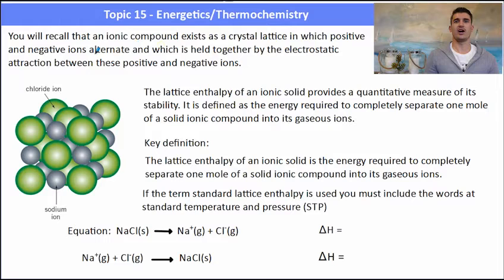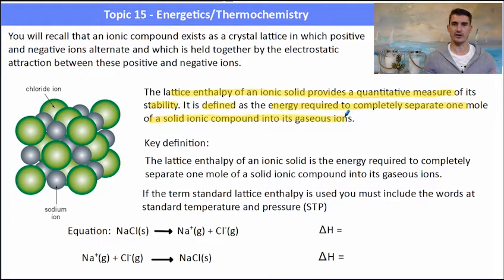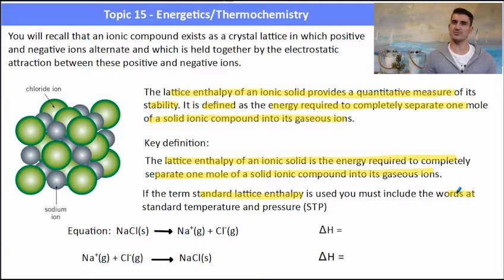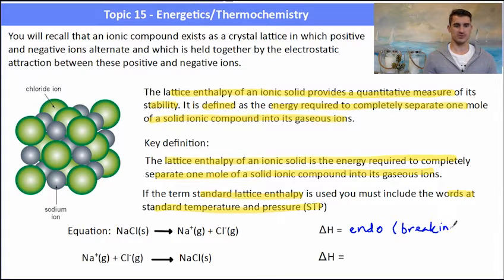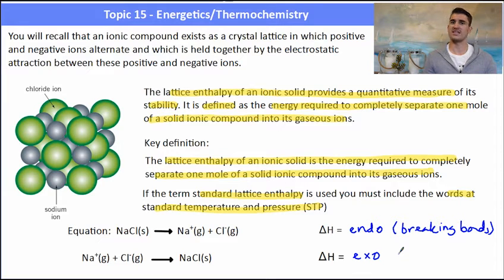An ionic compound contains a positively charged cation and negatively charged anion held together with electrostatic forces of attraction. The lattice enthalpy provides a measure of that ionic crystal's stability. Lattice enthalpy is defined as the energy required to completely separate one mole of a solid ionic compound into its gaseous ions. If they use the term standard lattice enthalpy, we need to include the words 'at standard temperature and pressure.' Breaking an ionic crystal into gaseous ions is bond breaking — an endothermic process. Conversely, when two gaseous ions form an ionic crystal, that is an exothermic reaction, because that's bond forming.